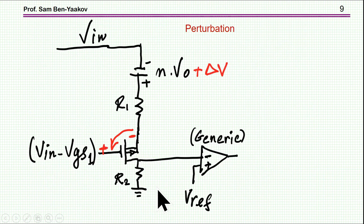So let's see now what happens if there is a change. So let's do some perturbation here. Suppose the output voltage is changing. So there is a change here in the reflected voltage.